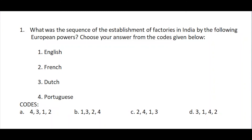Question number one: What was the sequence of the establishment of factories in India by the following European powers? Option one: English, option two: French, option three: Dutch, option four: Portuguese. The cards given are option A: four-three-one-two, option B: one-three-two-four, option C: two-four-one-three, option D: three-one-four-two. The correct answer is option A — four-three-one-two, that means Portuguese, Dutch, English, and French.